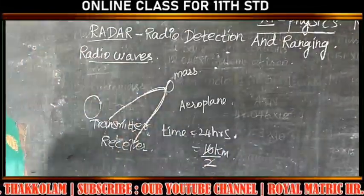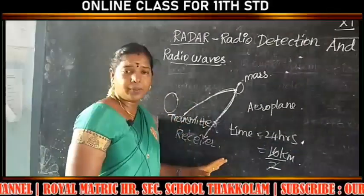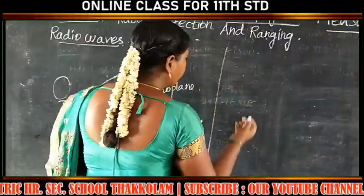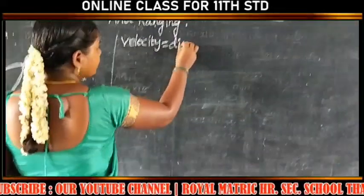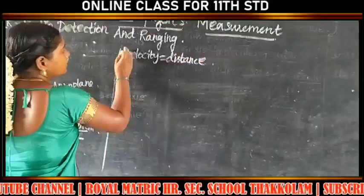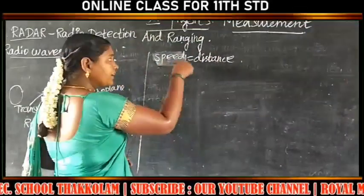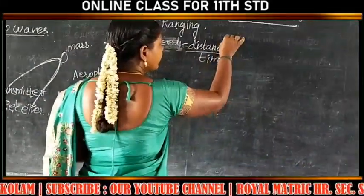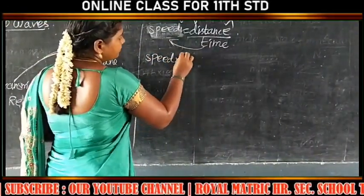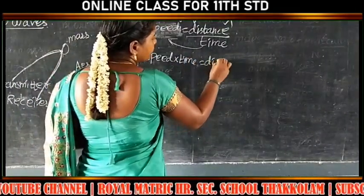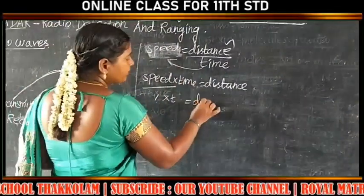We know the actual distance. We can calculate the distance using the same method as the parallax method. We can use the velocity formula: velocity is equal to distance divided by time. So speed into time equals distance — V into T is equal to D.